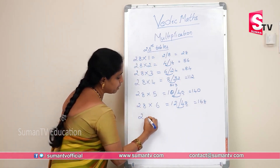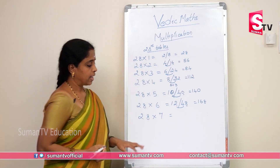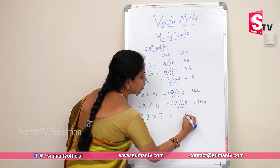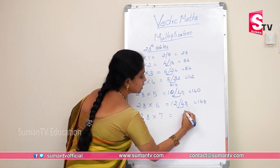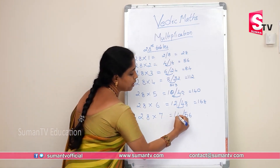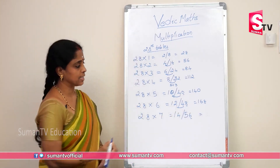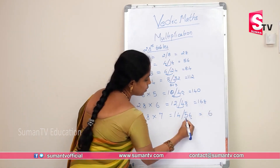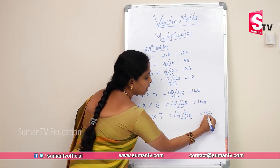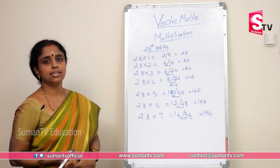28×7: 7×8 is 56. 7×2 is 14. Write 6 in unit place, carry 1. 5 plus 4 is 9, then add 1, giving 196 as the answer.